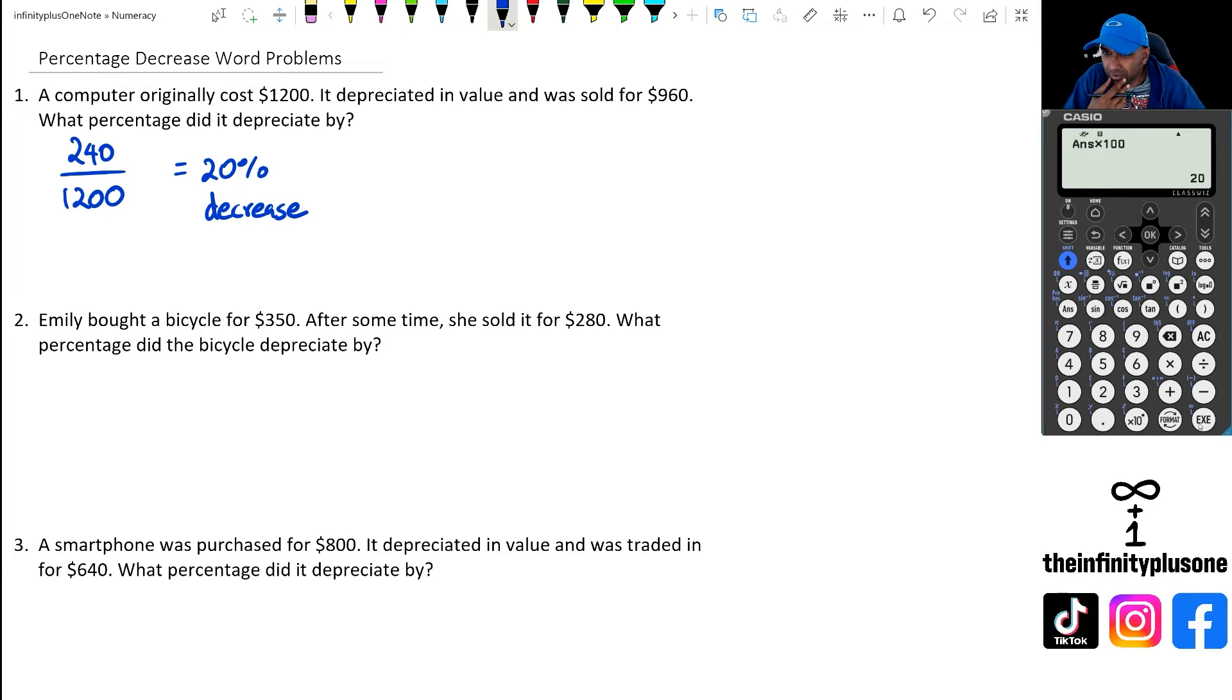Now, you might be thinking, is there a faster way of doing this? Absolutely there is. It's very similar to what we did in the percentage increase. What we're going to do is actually put in 960 divided by 1,200. Here's the thing, I'd like you to watch what happens here. We're getting 0.8. And if you think about it, 0.8 is the same thing as saying 80% of its original value. So it was 1,200, but 960 is actually 80% of that original value, which means this item has actually reduced by 20%.